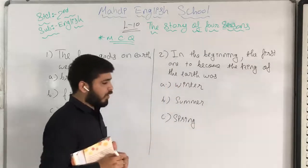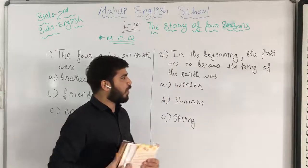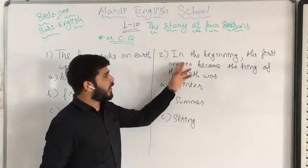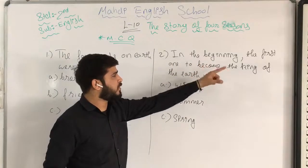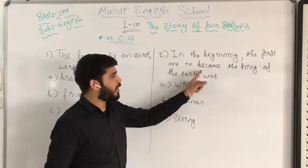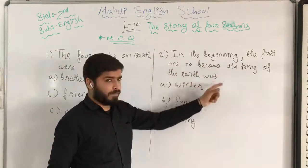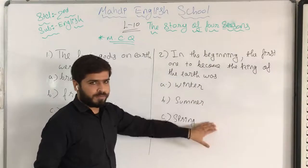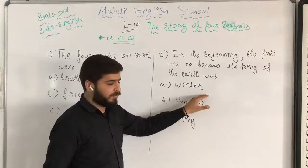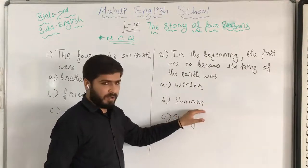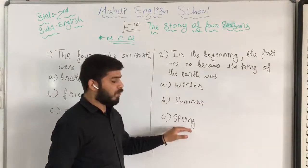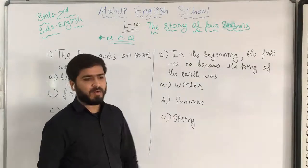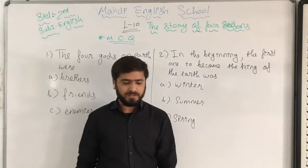I have written question number 2 on this side. In the beginning, the first one to become the king of the earth was — options are winter, summer, or spring. Please write it down. I will wait for a while.